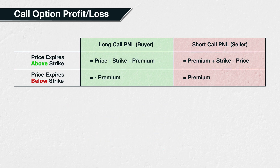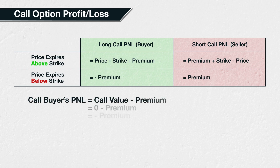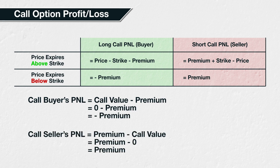When the call option has no value at expiry because the price expires below the strike, you can substitute in zero for the call value. This gives the call option buyer's P&L as zero minus premium, which equals minus premium. And the call seller's P&L equals premium minus zero, or just the premium.